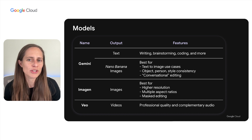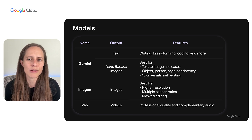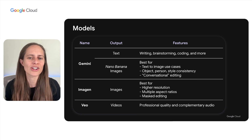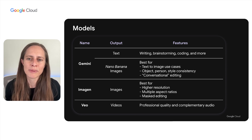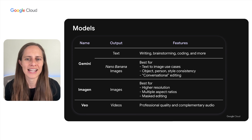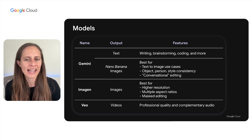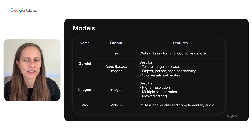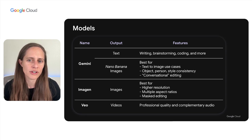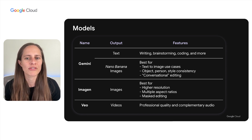Our original image model, Imagine, generates photorealistic images with remarkable speed and clarity. It is best for higher resolution content, scenarios where you need multiple aspect ratios, and masked editing of specific image components. And of course, our video generation model, Veo, helps you generate videos from text or images with professional quality and complementary audio. In addition to these models, we also have models for speech-to-text and music generation, enabling users to generate content across all media modalities, which is pretty epic.